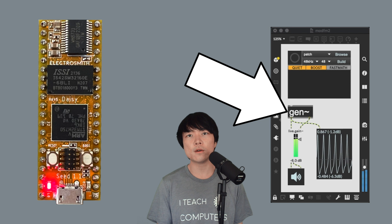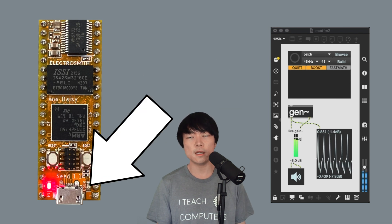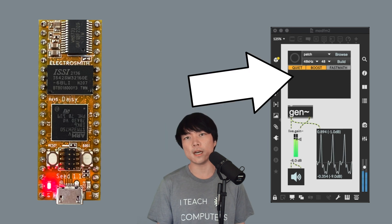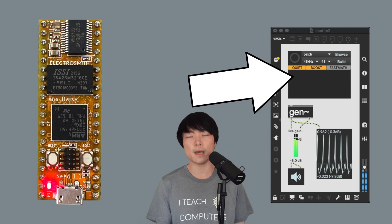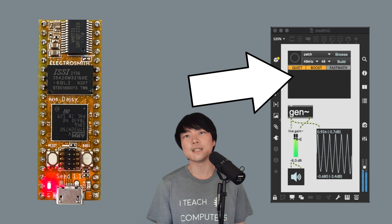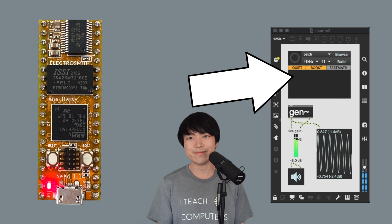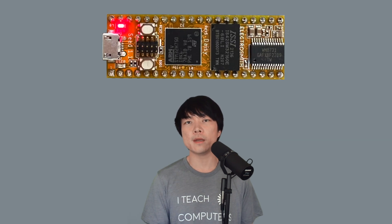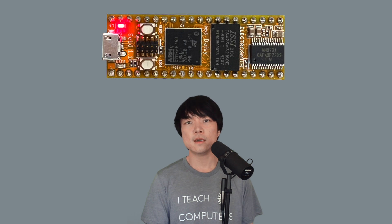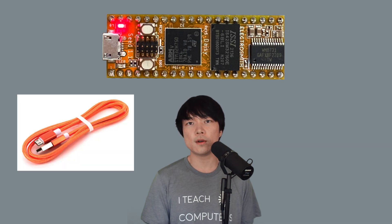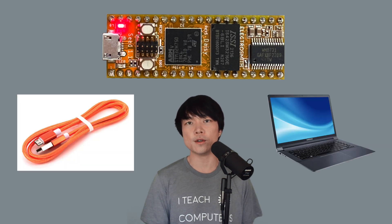By the end of this video, we'll be able to make DAISY blink using the oopsie object within Max. First thing we'll need is DAISY, which is an embedded platform for music. We also need a USB cable and a computer.